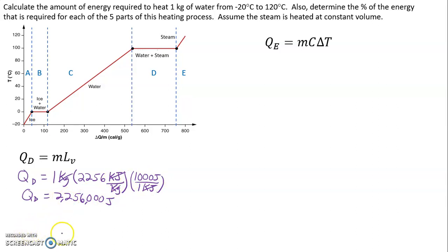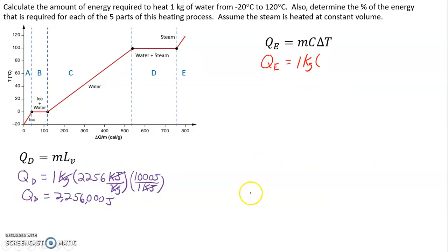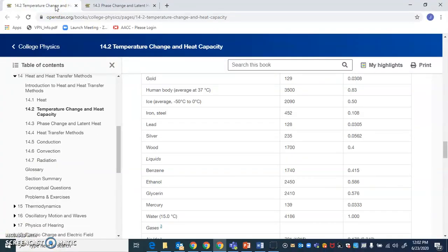Now on to the last part, Qe. One kilogram times the specific heat capacity, but this one's not going to match the specific heat capacity that we had in region C or region A, because this was for ice, this was for liquid water. Now we need the specific heat capacity for steam. We need to go ahead and look that up. So we go back to section 14.2, table 14.1, and we look and steam right here has two values: 1520 or 2020.